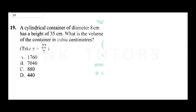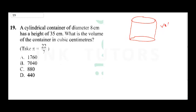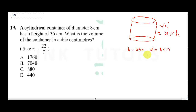A cylindrical container of diameter 8 cm has a height of 35 cm. What is the volume of the container in cubic centimetres? The cylindrical container is a cylinder, so we need the volume formula for a cylinder: V = π r² h. We've been given height as 35 cm and diameter as 8 cm. From the diameter we get the radius: radius = diameter over 2 = 8 over 2 = 4 cm.